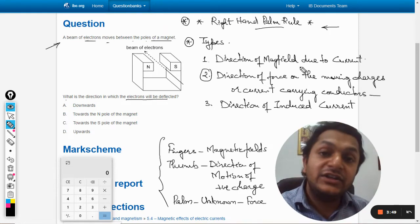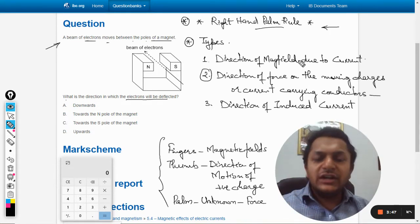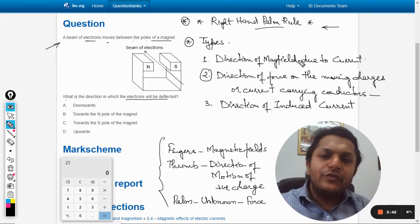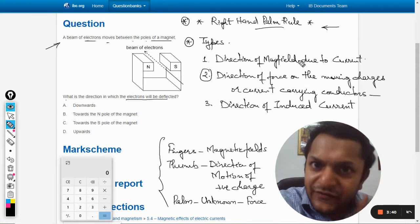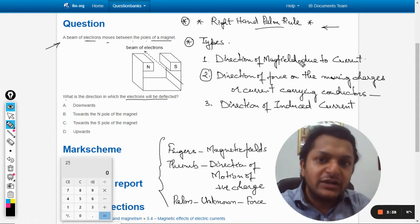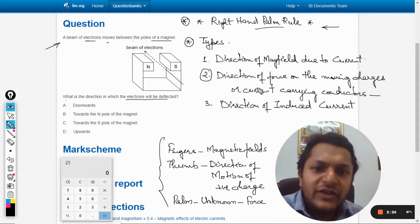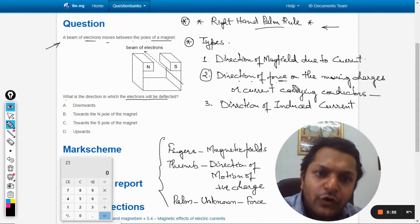First is to find the direction of a magnetic field due to a current. So when you study that a current is used to produce a magnetic field and we need to find the direction of the magnetic field that was produced with the help of current, we use this rule. That is type 1.